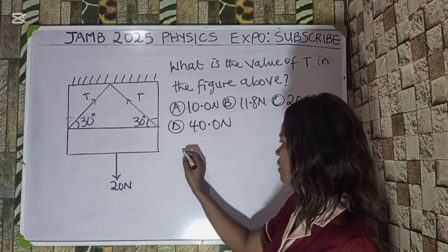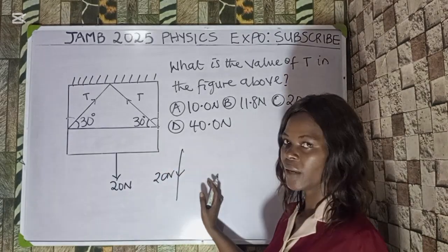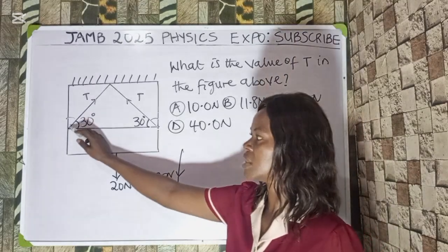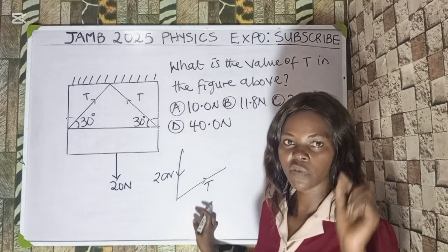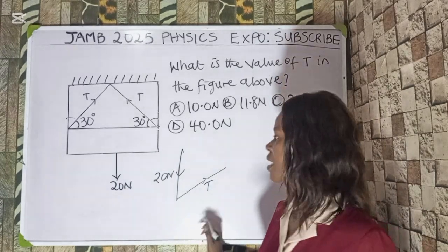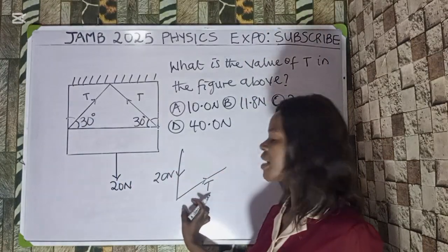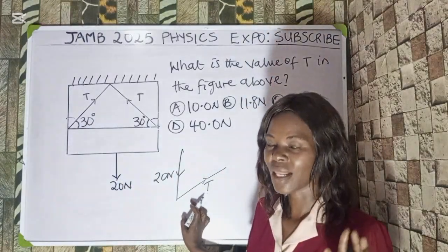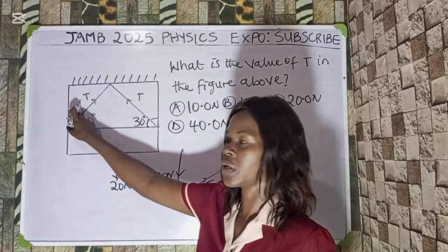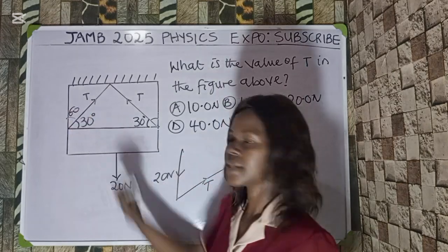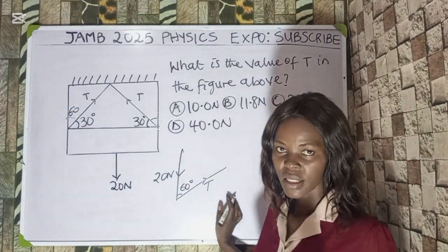Now look at it. This force of 20 newton is acting down. Now look at this tension T — it's going this way, so I will go this way. Remember, I must follow the way the diagram is to avoid making mistakes. Now this tension T has an angle of 30 degrees with the horizontal. But from my diagram I do not have horizontal — I have vertical. So what I'm going to do is say 90 minus this angle, which gives me 60 degrees. So that's what I have here — 60 degrees.